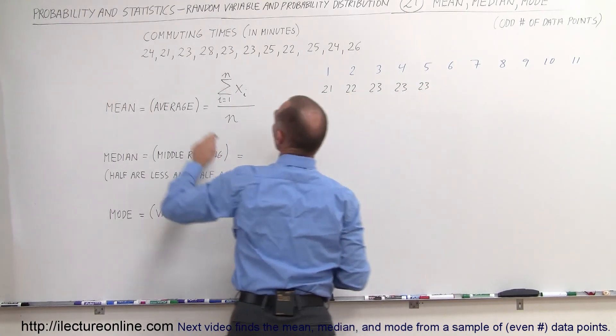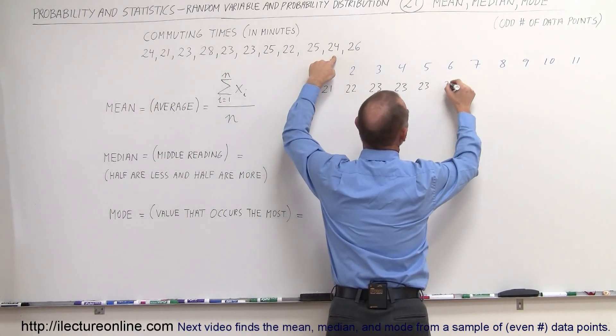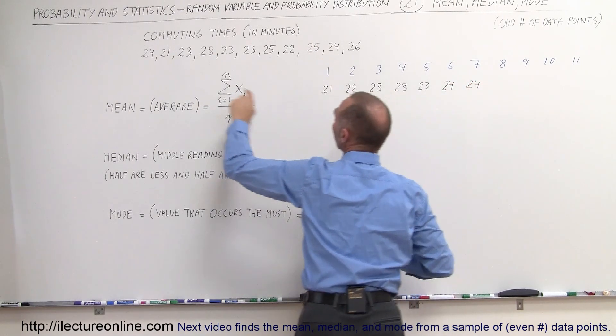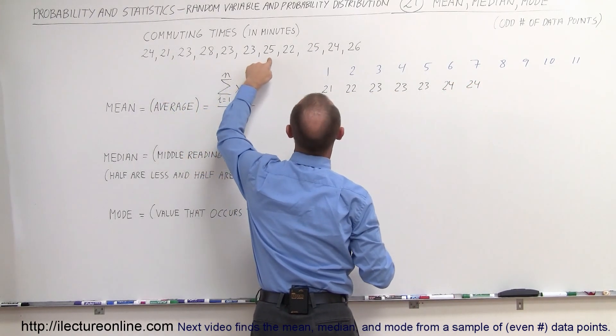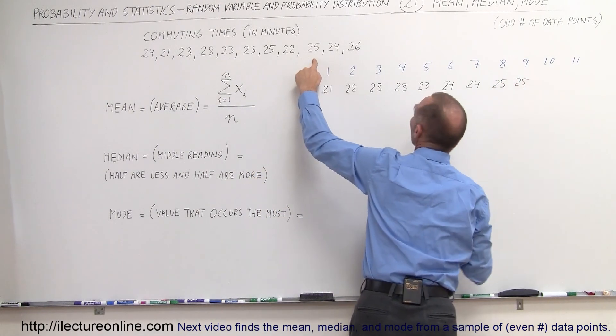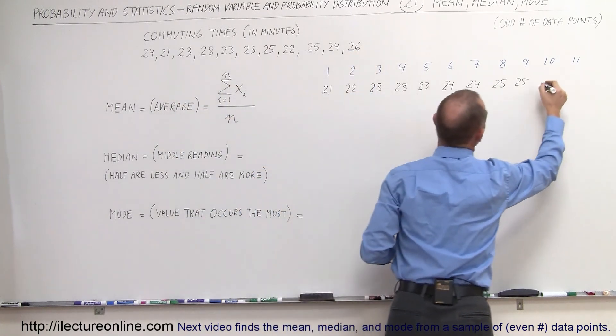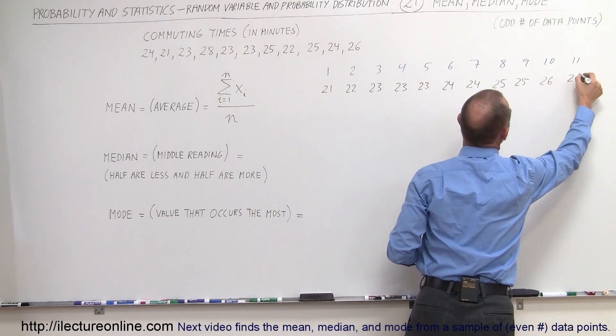Okay, how about 24? We have one 24, we have another one, there's two 24s. Okay, how about 25? There's one and there's two. 25, 25. How about 26? I see one here.